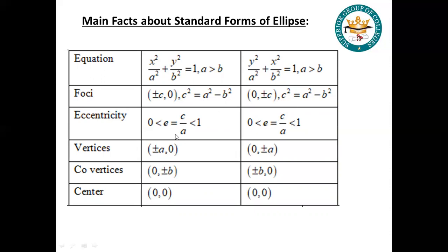The eccentricity we talked about earlier: for a parabola it is 1, for an ellipse it is less than 1, between 0 and 1, and for a hyperbola it is greater than 1.